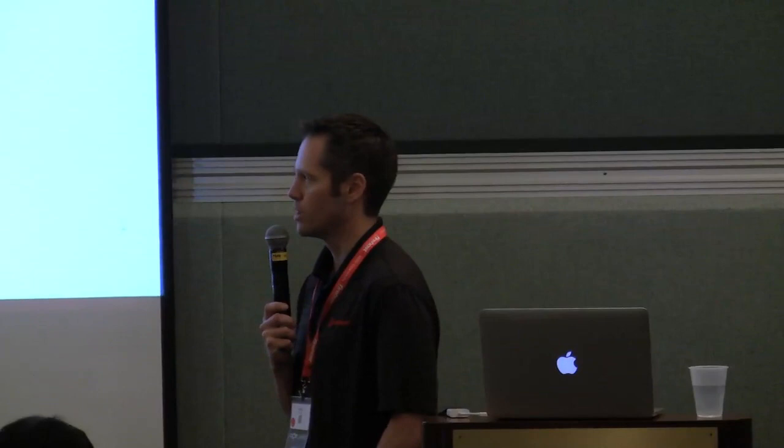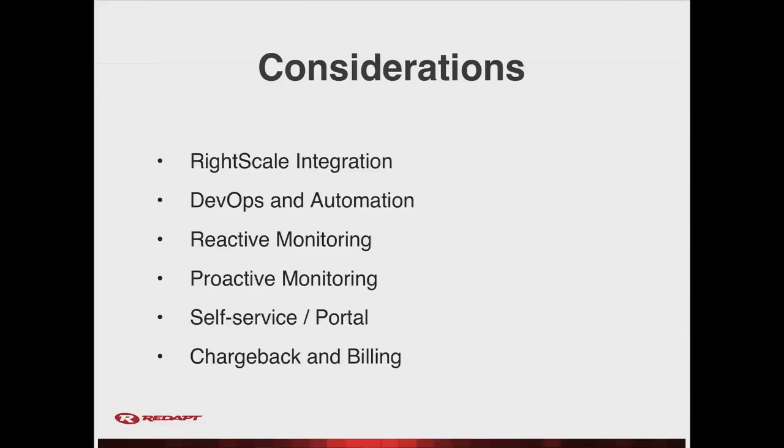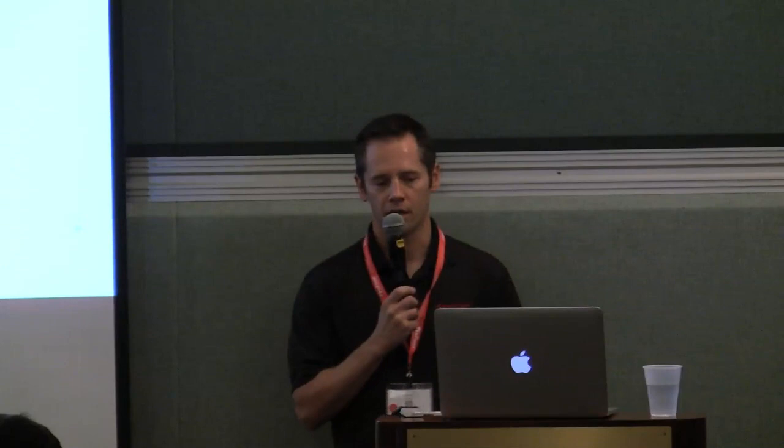Everyone's going to have to recreate it, whether it's moving from dev to test, test to staging, staging to production, or making it DR ready. Those all require templated instantiations in different resource pools. Other things to think about are DevOps and automation. You also want to think about monitoring — both reactive and proactive. The reactive piece you can get from the RightScale layer; you may also want to add components like Nagios or Ganglia to proactively monitor your systems for outages, resource constraints, or disks getting full.